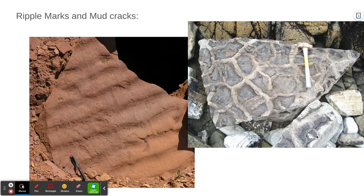Another kind of fossil feature is mud cracks. Imagine a mud puddle that dries up in the spring and you see those cracks in the mud. Those cracks can get filled with other minerals that look different and can be preserved over millions of years. Here's a great example, and again it's evidence of sedimentary rock formation.